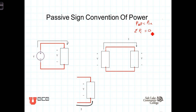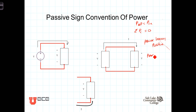So the passive sign convention says that positive power — power with a positive sign — will be power that is leaving the circuit. Power entering the circuit will be negative, or have a negative sign associated with it.